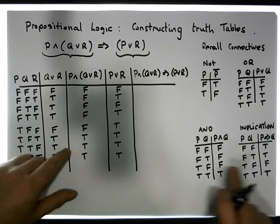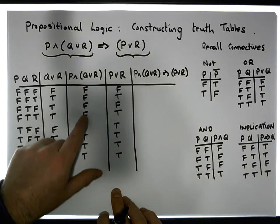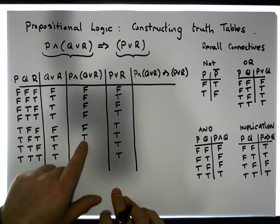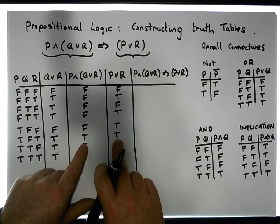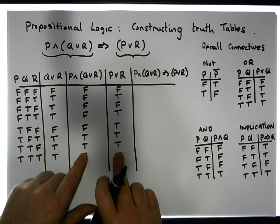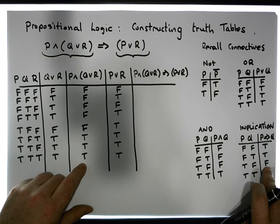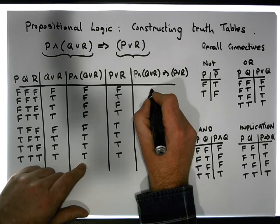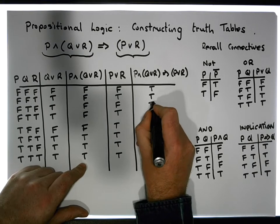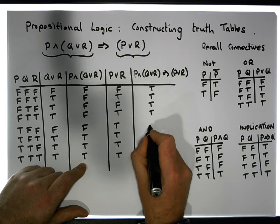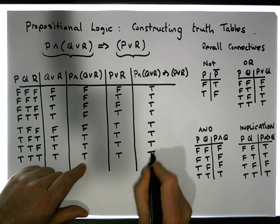So where do we have the premise true? Here's where the premise is true. Is the conclusion ever false in any of these cases? No, it's not. So we never have a situation where we have false. What we have here is that this must be true, true, true, true, true, true, true, true, true.